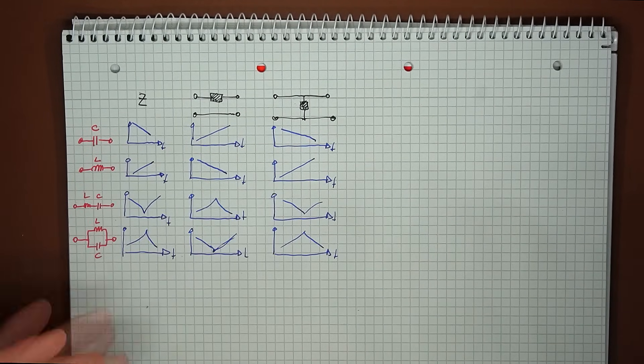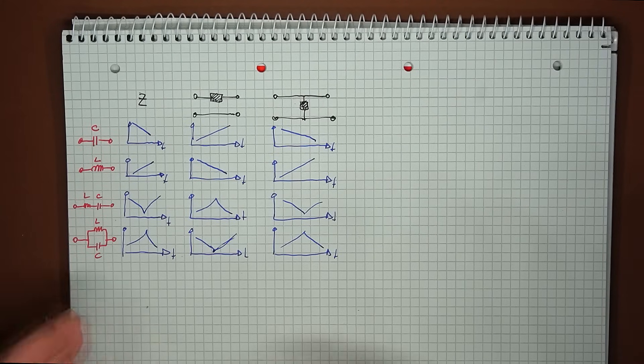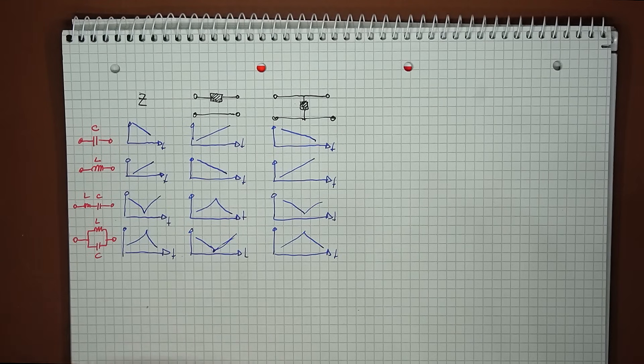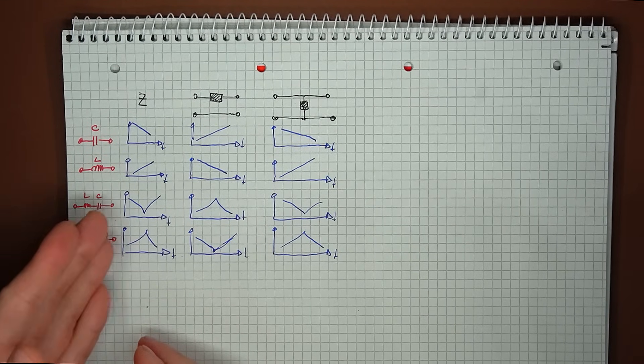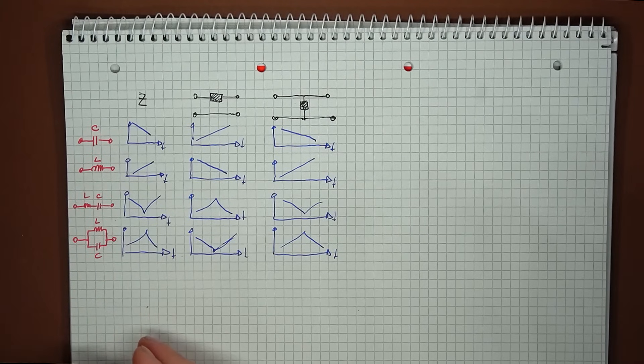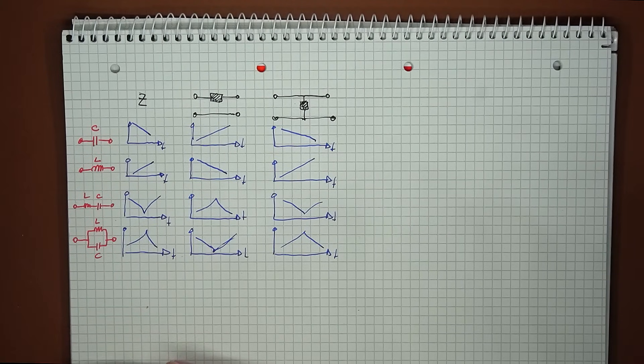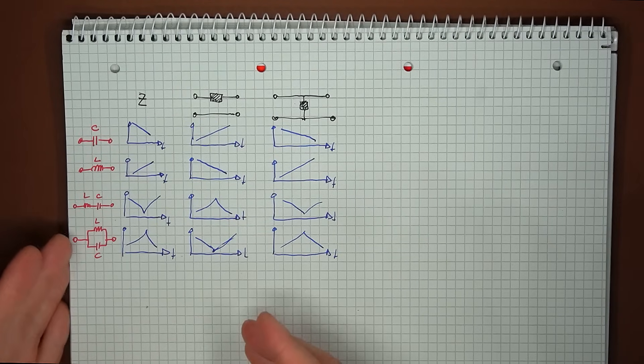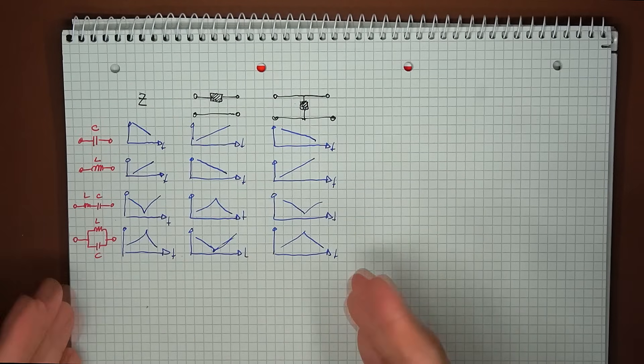We can construct groups of two reactive components, either have an inductor in series with a capacitor, or in parallel. This gives us new impedance shapes, where the variation changes slope after a resonance point. For the series circuit, impedance starts high, then drops, and then rises, and for the parallel circuit, we have the opposing behavior. So based on whether the elements are in series or parallel, we get a very clear bandpass or bandstop response.